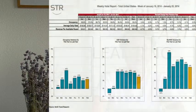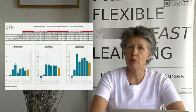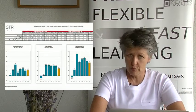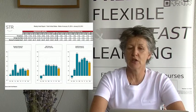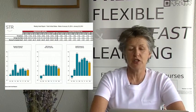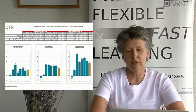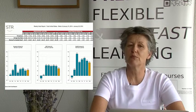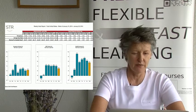Here on the screen you see an example of a weekly hotel report from STR Global. We can see the focus is on room occupancy, average daily rate, and revenue per available room. Those are the calculations we're going to look at shortly.